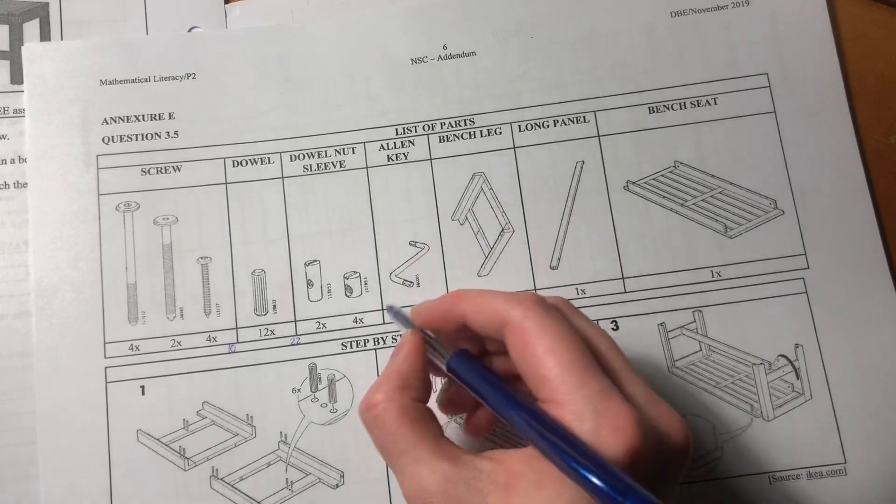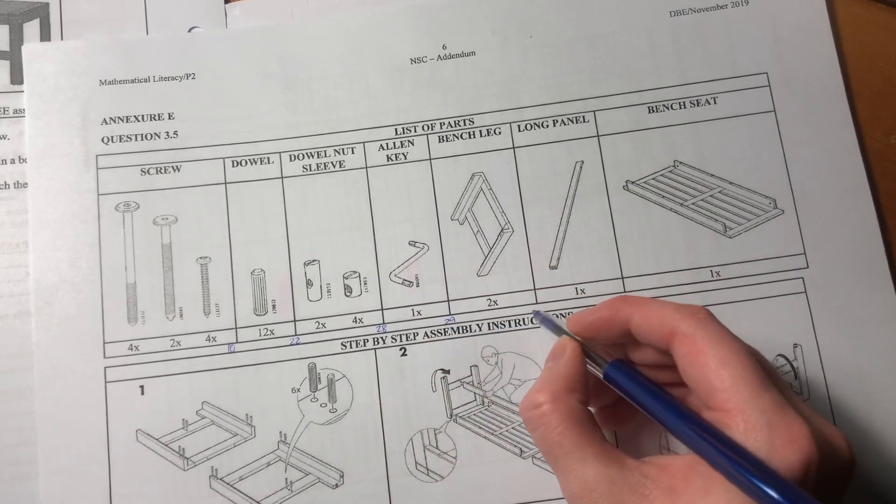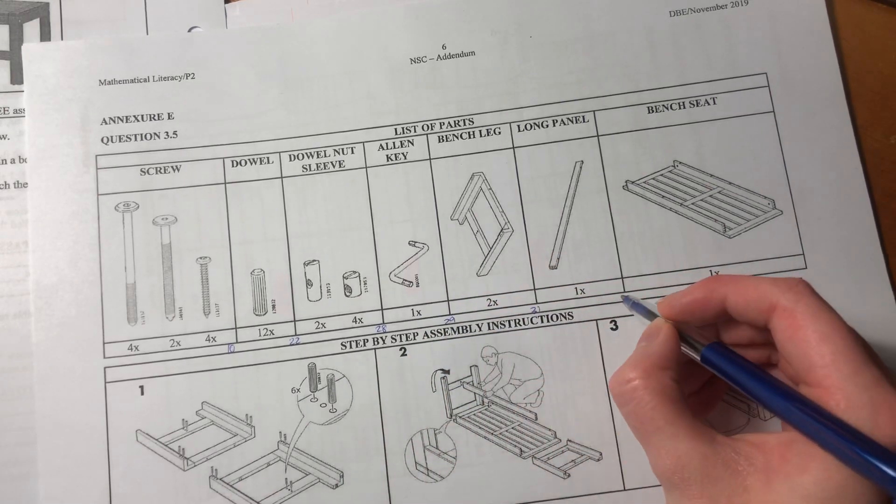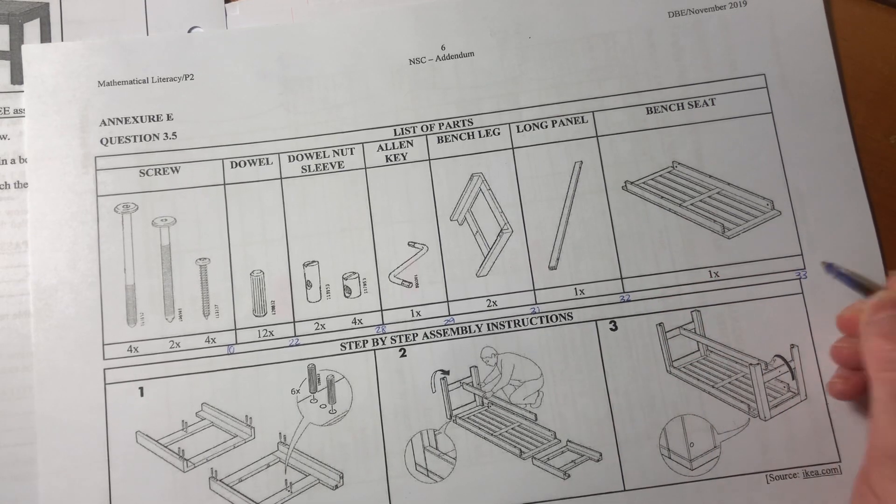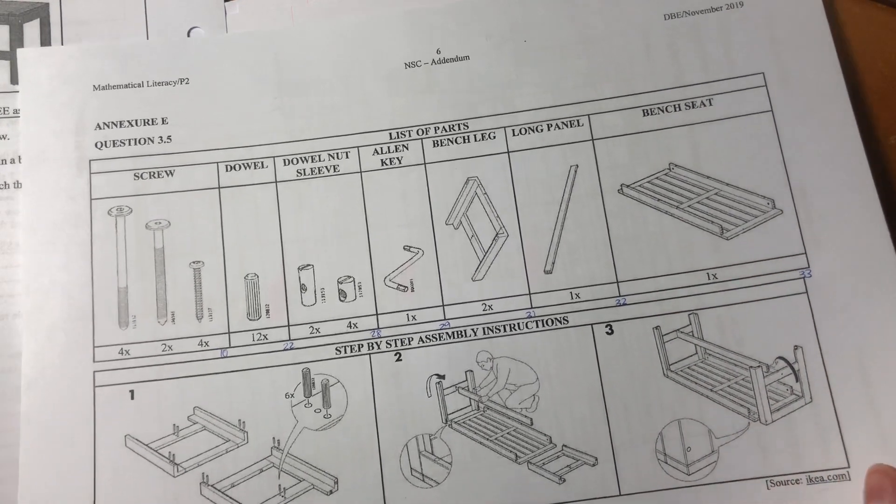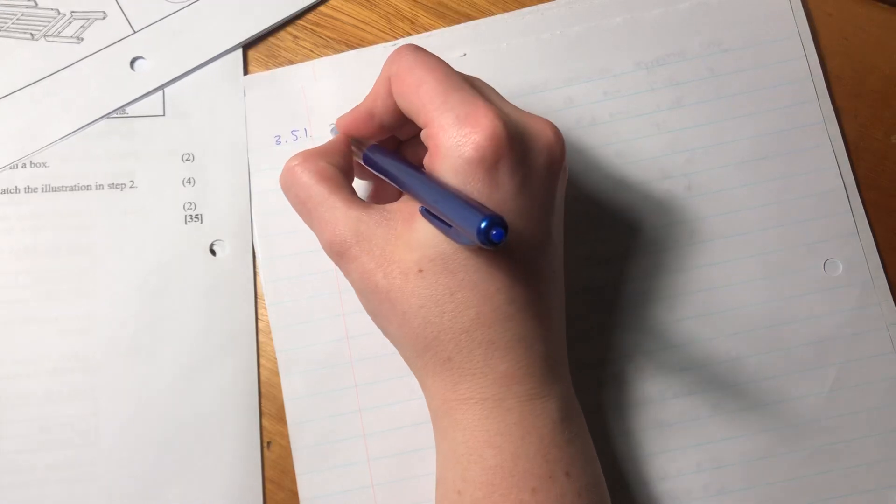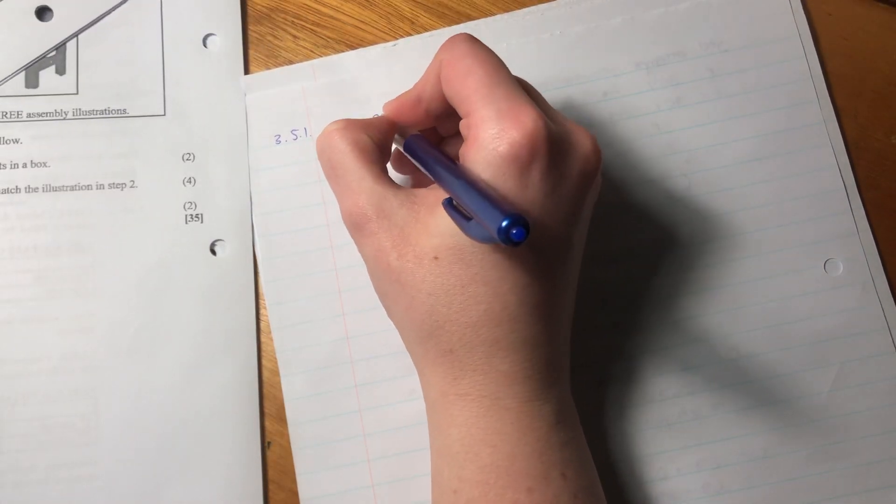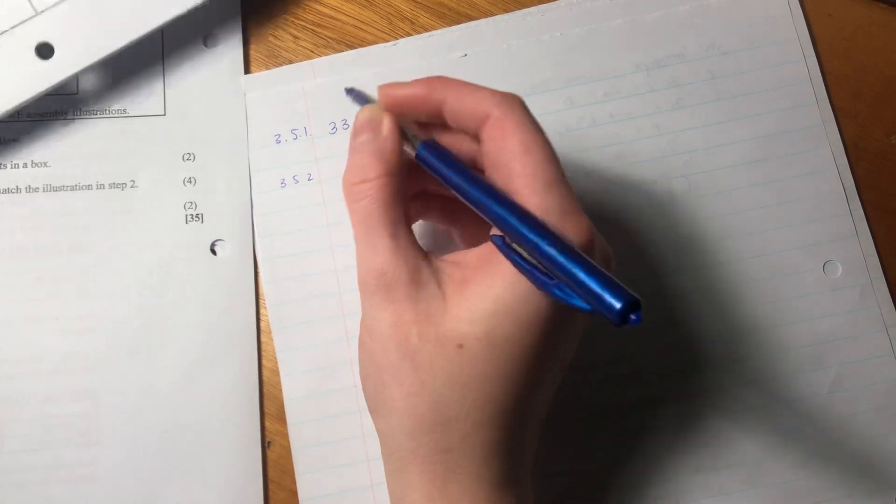So 22 plus two is 24. Plus four is 28. Plus one is 29. Plus two is 31. Plus one is 32. 32 plus another one is 33. Cool. So there are 33 parts. You can check me on your calculator, but I'm pretty sure that is the answer. So you can say there are 33 parts. So you're going to have to put all of those together and get a bench.